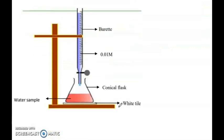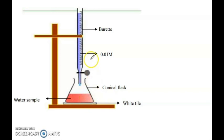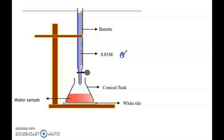For the practical setup: this is your burette and this is the wooden burette stand. In the conical flask, we have taken the water sample — 25 ml water sample is taken here. This is our 0.01 molar silver nitrate AgNO₃ taken in the burette. The burette is filled with the silver nitrate solution.